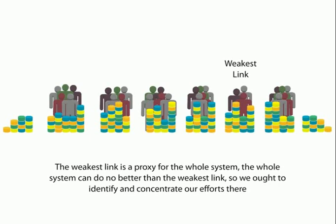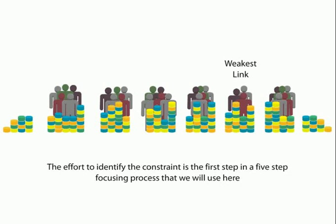The whole system can do no better than the weakest link, so we ought to identify and concentrate our efforts here. We were looking for a place which should play as a proxy to the whole system output. The weakest link, by definition, is that link which is limiting the output of the system. So if we focus on improving the output of the weakest link, the system output goes up. So we have identified the weakest link, which is the first step.